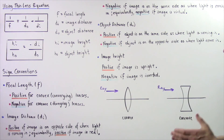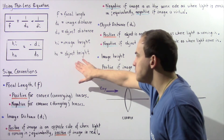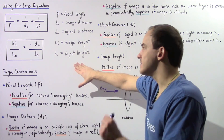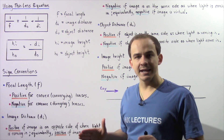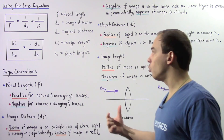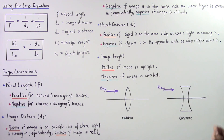Now let's move on to the image height. We define the image height to be positive if the image is upright and negative if the image is inverted. Finally, the object height is always defined to be positive — we always place our object upright.